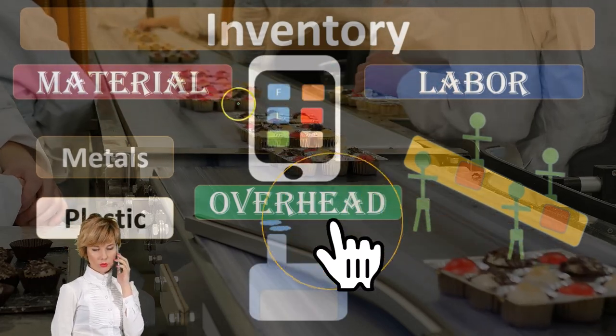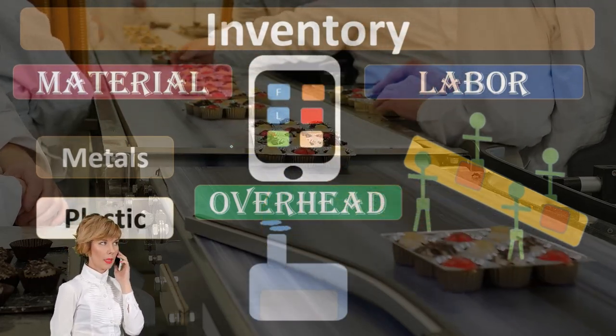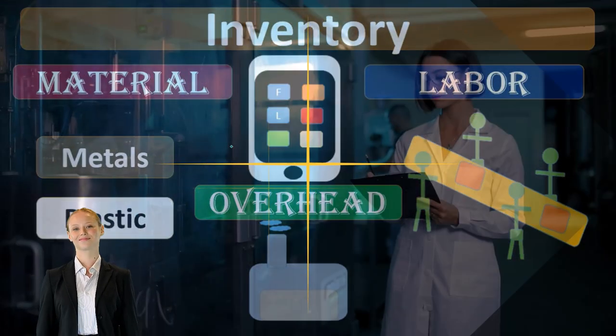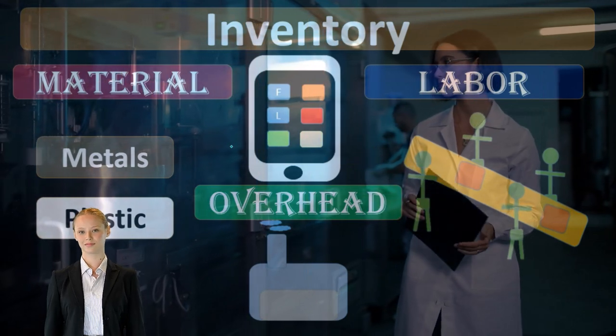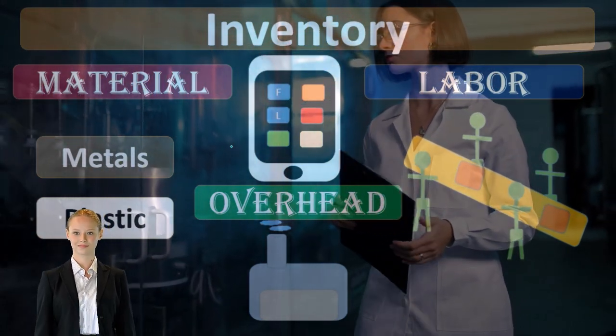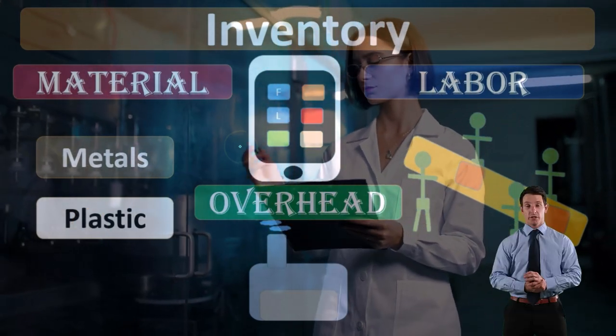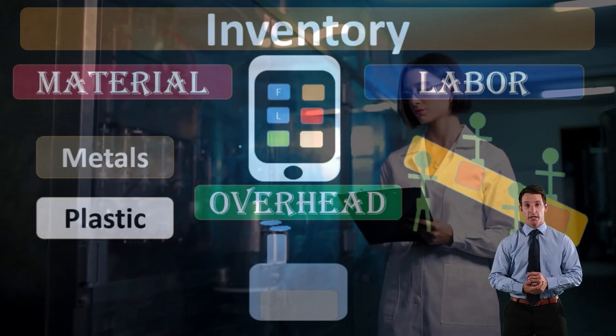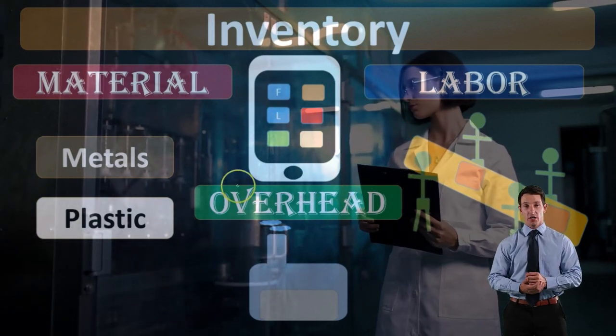So the components we have are materials, labor and overhead, but we can break that out a little bit more in terms of the direct material versus indirect material and the direct labor versus indirect labor. Direct materials being the main thing, the big costs that are going to be included. Indirect materials being those small costs that it's not worth our time to track and therefore they're going to be part of overhead.